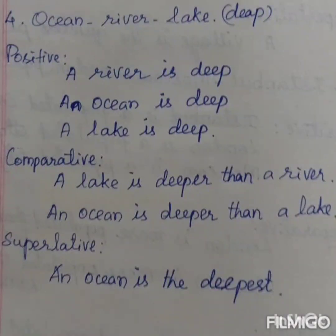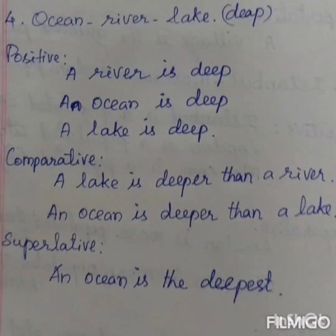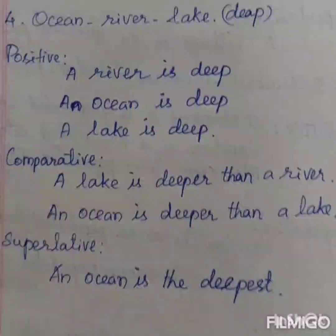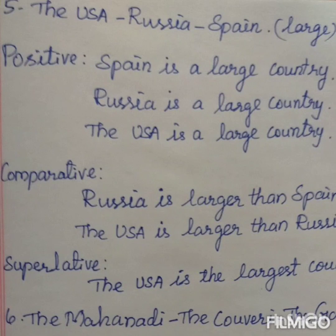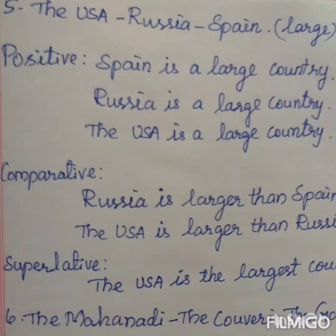Next: ocean, river, lake — adjective is 'deep'. For positive degree: a river is deep, or an ocean is deep, or a lake is deep. For comparative degree: a lake is deeper than a river; an ocean is deeper than a lake — it should be meaningful. For superlative degree: an ocean is the deepest of all.